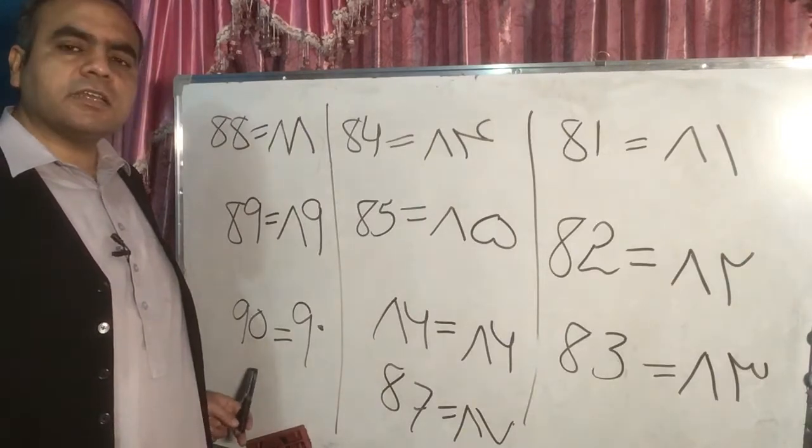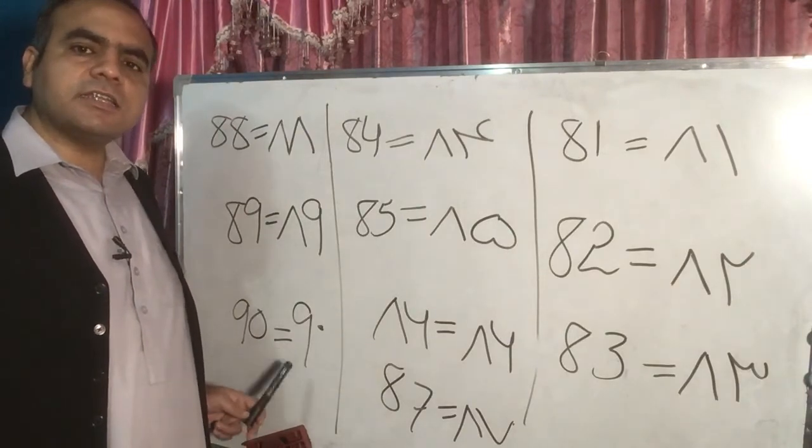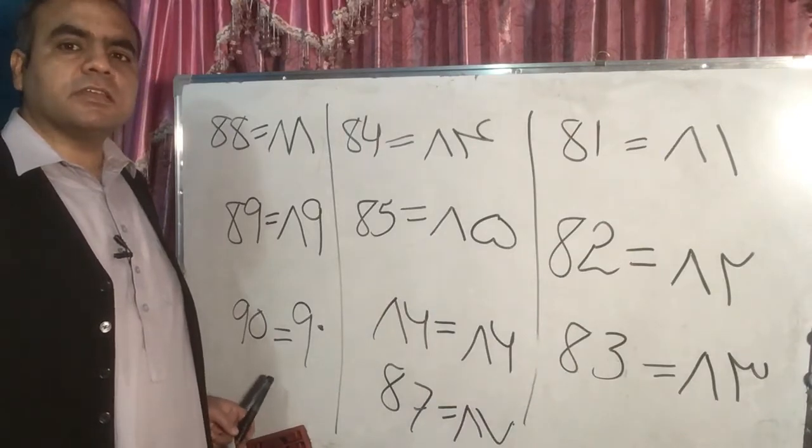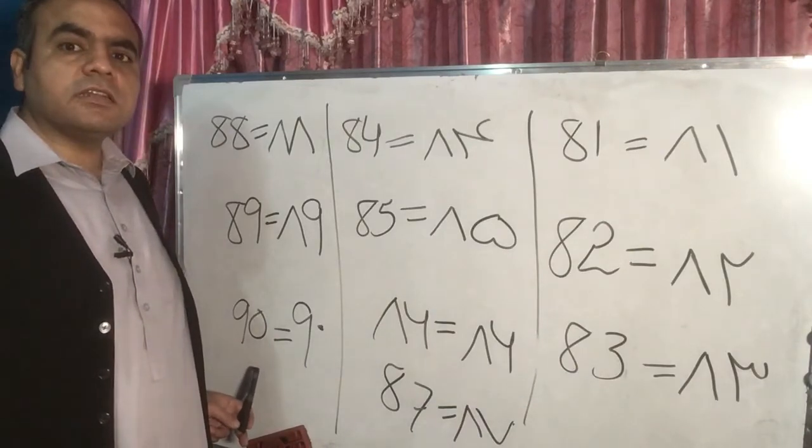This number, Pashto in English is little equal. For example, we say Navi. In English, you say 90.